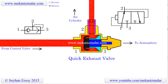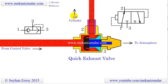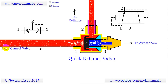Welcome to the video tutorials of mechanisms by Mekonismiller. Quick exhaust valves provide rapid exhaust of control air when placed between control valve and cylinders. They can also be used as shuttle valves. These components allow higher piston speeds to be achieved on the return stroke of single and double acting cylinders.